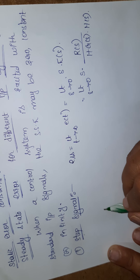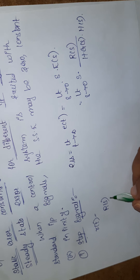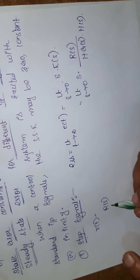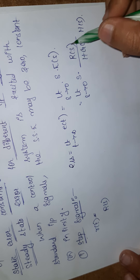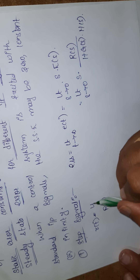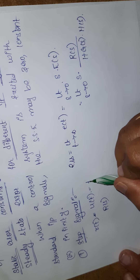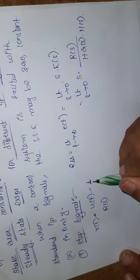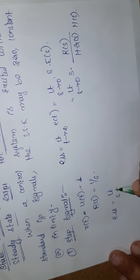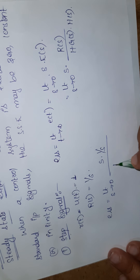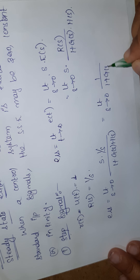The input I am giving is a step signal, so R(t) = u(t). For a unit step signal with magnitude 1, R(s) = 1/s. Substituting, E_ss = limit s→0 of s · (1/s) / (1 + G(s)H(s)), which simplifies to limit s→0 of 1 / (1 + G(s)H(s)). Applying the limit, this becomes 1 / (1 + limit s→0 of G(s)H(s)).